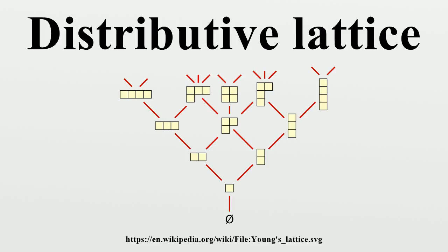A lattice-ordered vector space is a distributive lattice. Young's lattice, given by the inclusion ordering of Young diagrams representing integer partitions, is a distributive lattice. Early in the development of lattice theory, Charles S. Peirce believed that all lattices are distributive — that is, distributivity follows from the rest of the lattice axioms.